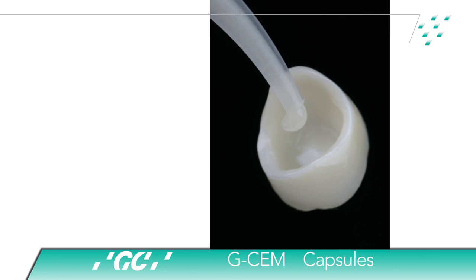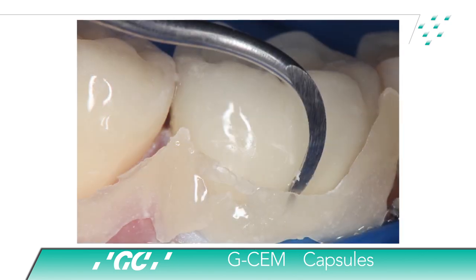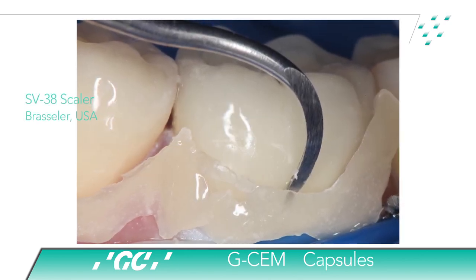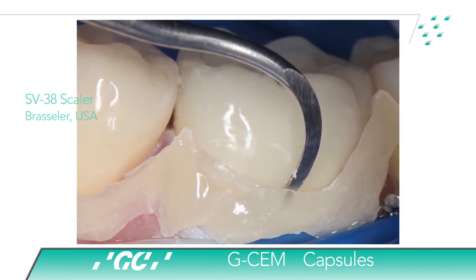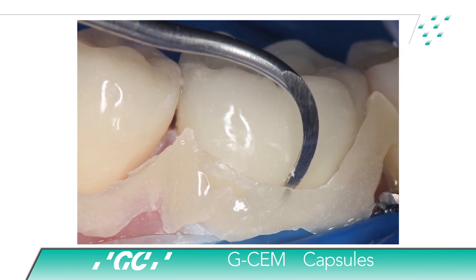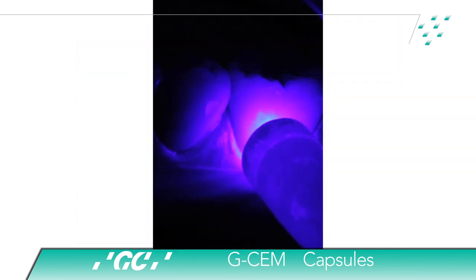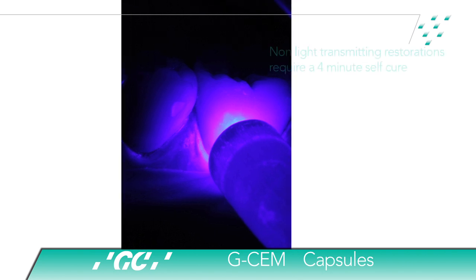The working time is 2 minutes and 15 seconds from the start of mixing. Prior to removing excess cement, the resin was polymerized using a visible light curing unit for 2 to 4 seconds. The excess is easily removed with an SV38 scaler by Brasseler. After excess cement is removed, continue to light cure each surface for 10 seconds.